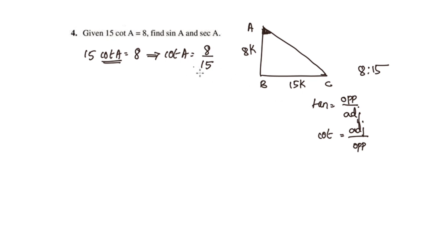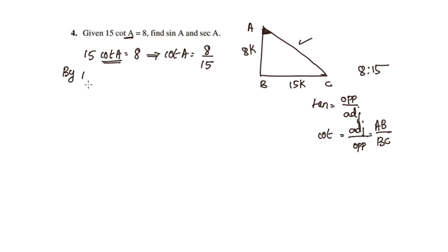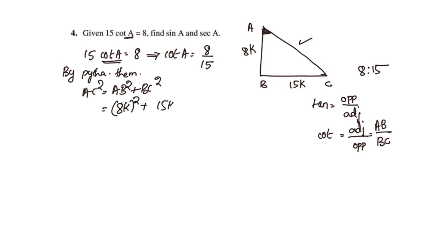Now we have the values: AB is 8K and BC is 15K. We need to find the hypotenuse using the Pythagorean theorem. AC squared equals AB squared plus BC squared, which is 8K whole square plus 15K whole square, equal to 64K squared plus 225K squared.